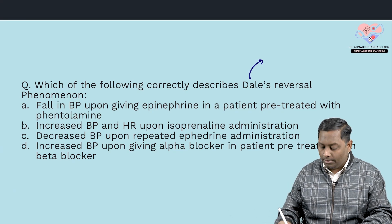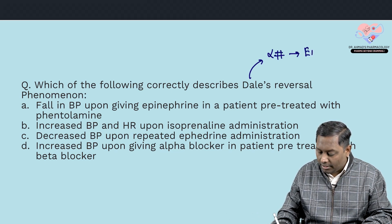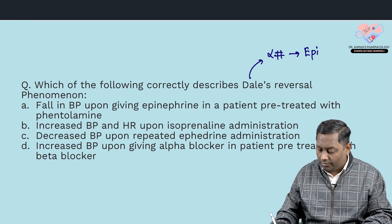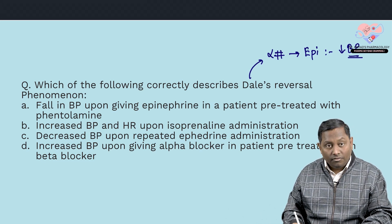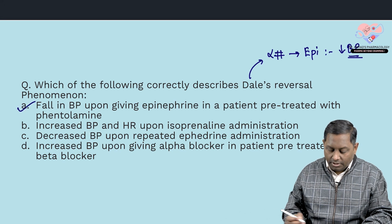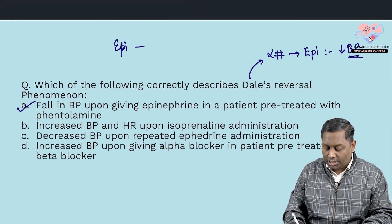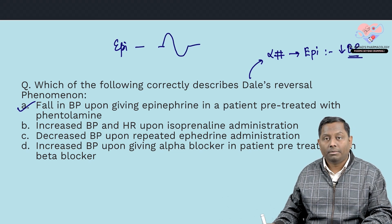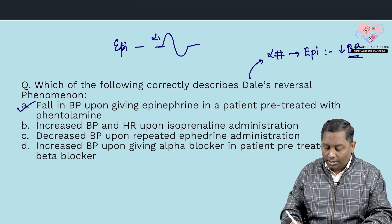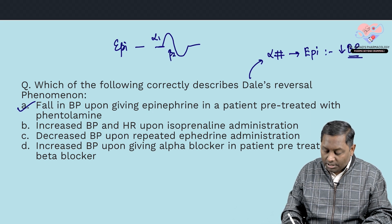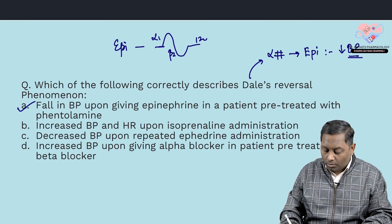Fourth question: which correctly describes Dale's reversal phenomenon? In the presence of an alpha blocker, when a high dose of epinephrine is given — pre-treated with phentolamine — there is only a fall in blood pressure. Alone, epinephrine has a biphasic response: first increases BP via alpha-1 receptors, then decreases it via sensitive beta-2 receptors, then returns to normal.